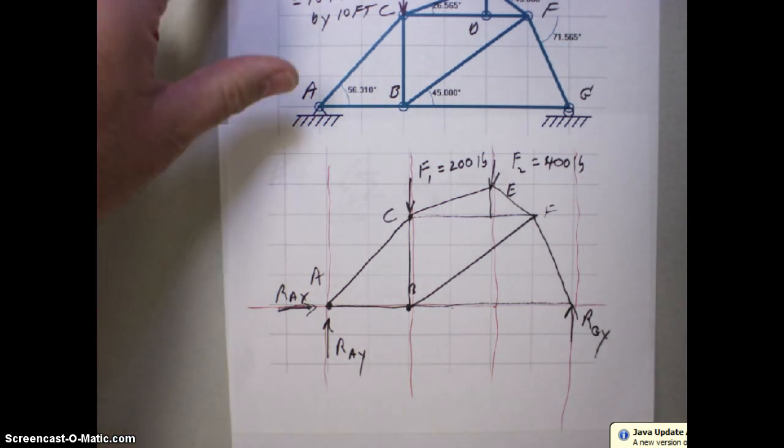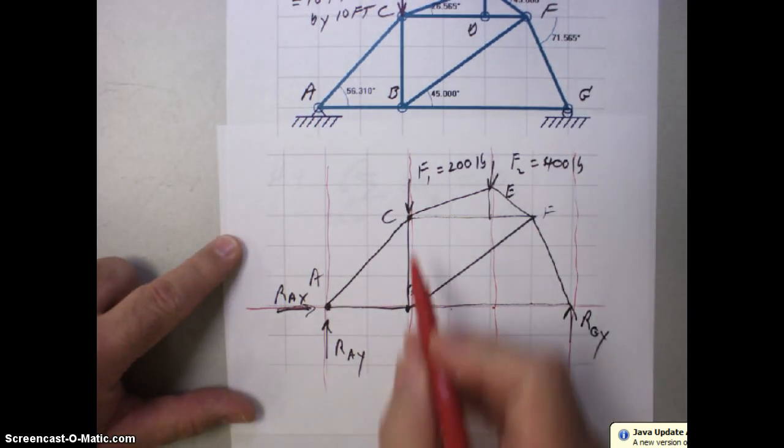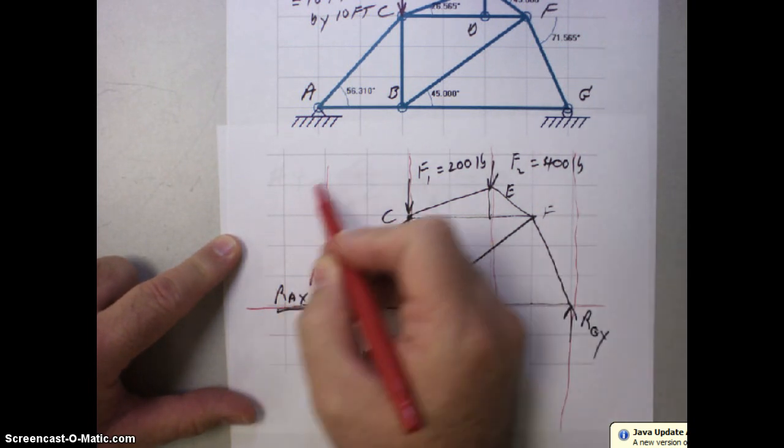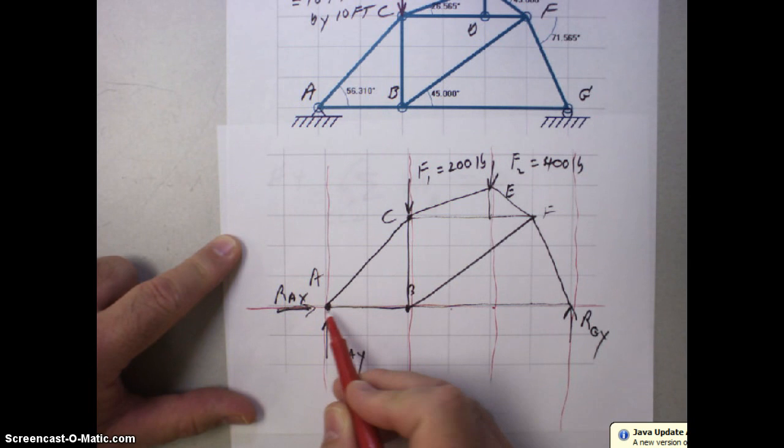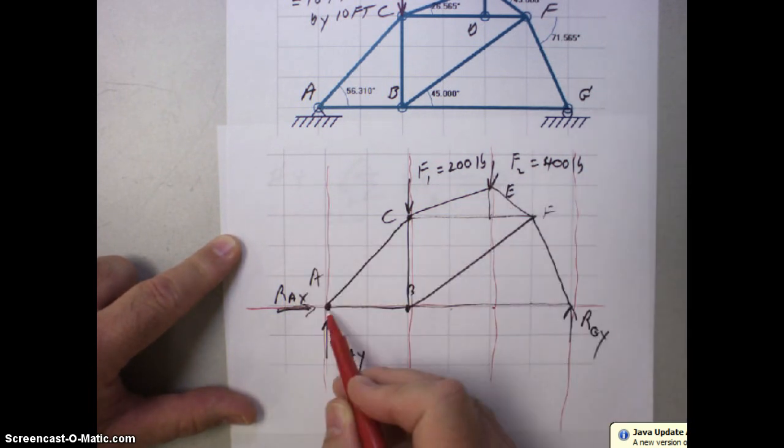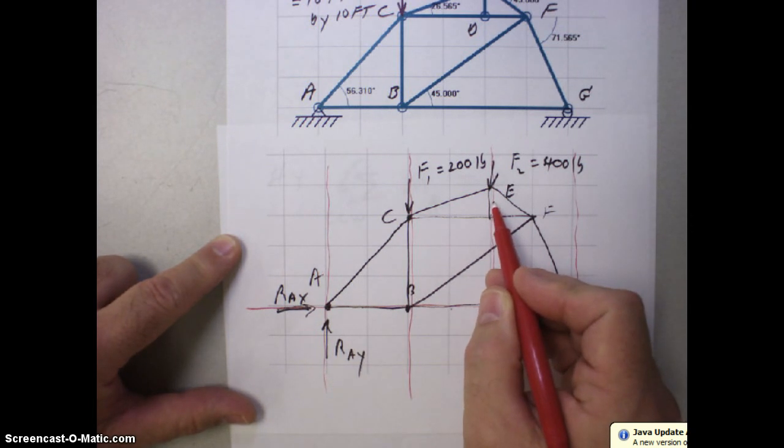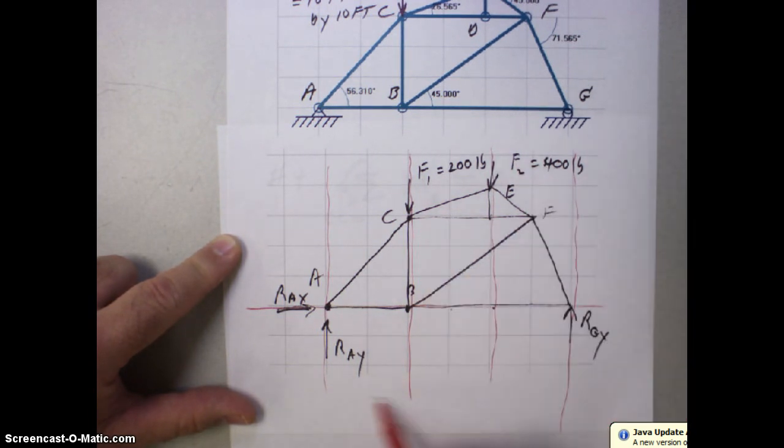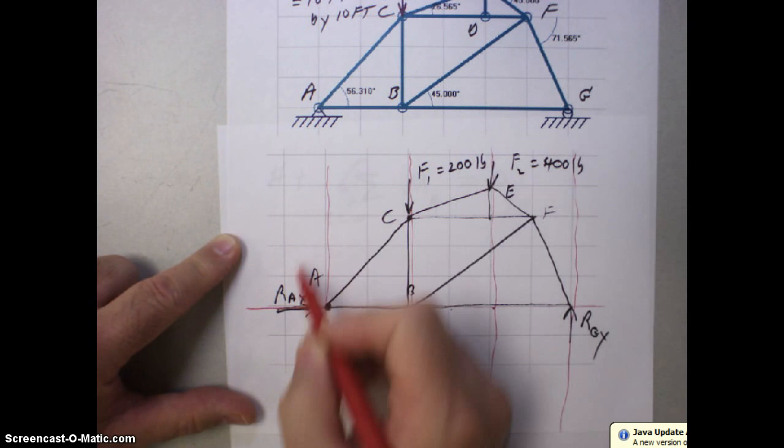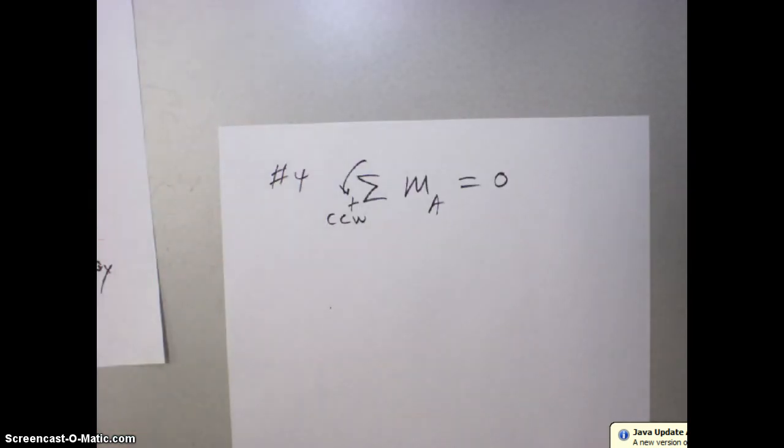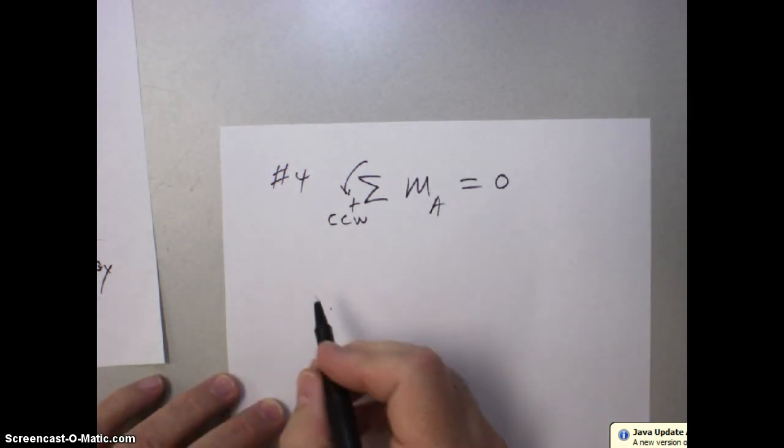So while we're here, let's also talk about direction. F1 is making or wanting to make this turn clockwise about point A. F2 is making it want to turn clockwise about point A. So clockwise and clockwise are negative directions for moments. Here, this RGY, if it could turn, would want to make it turn counterclockwise, which as you remember, we declared was positive. So with all that information, let's go ahead and do a little work on our problem here.